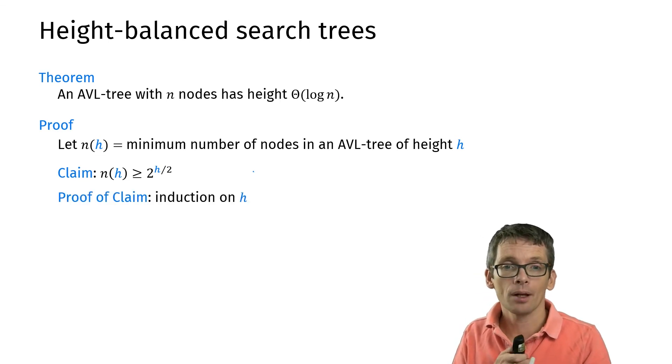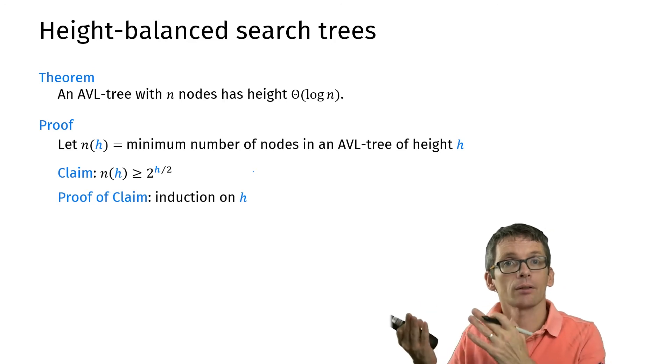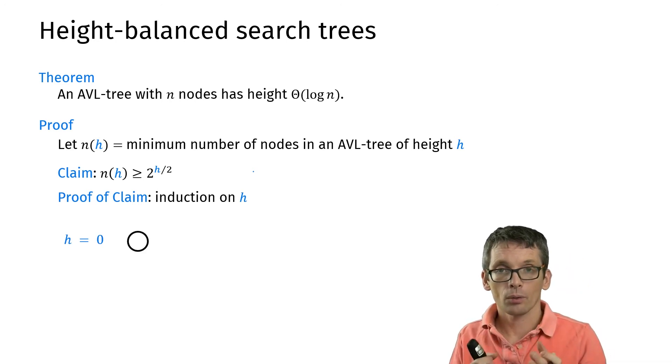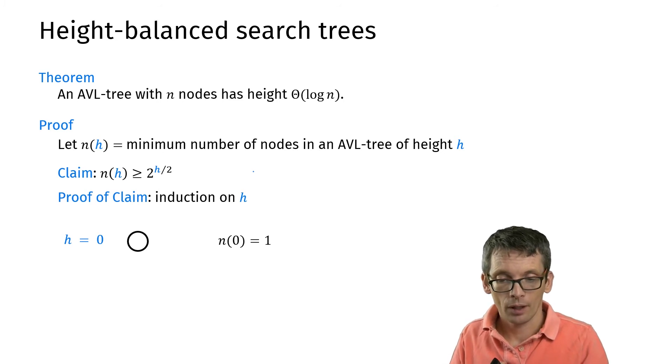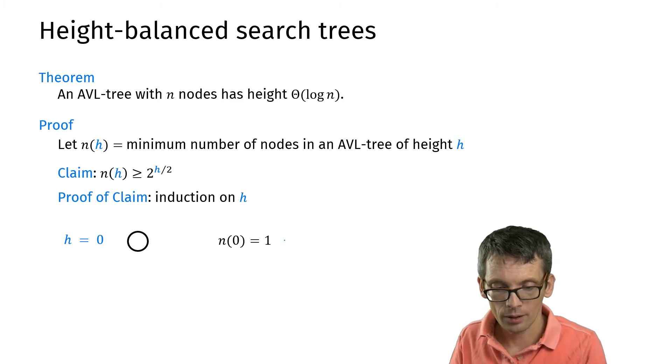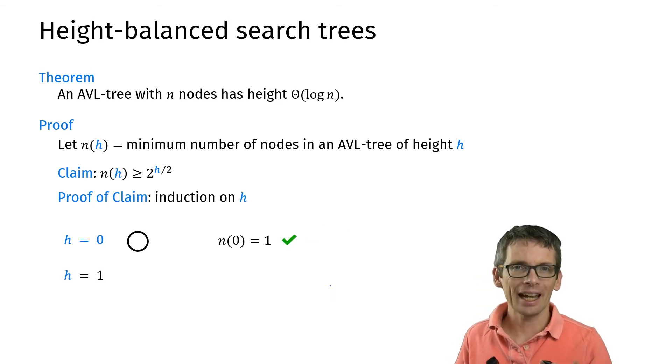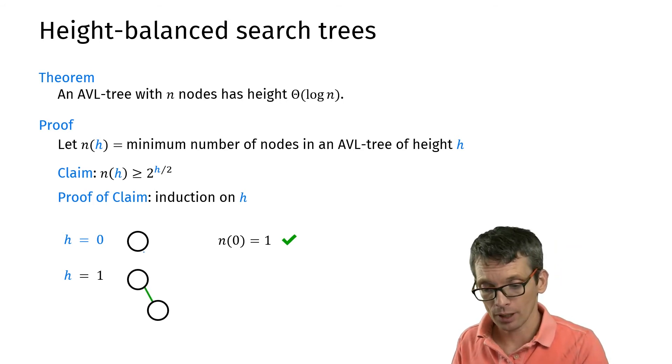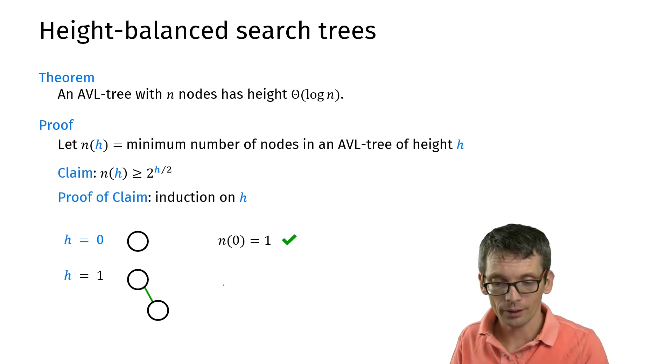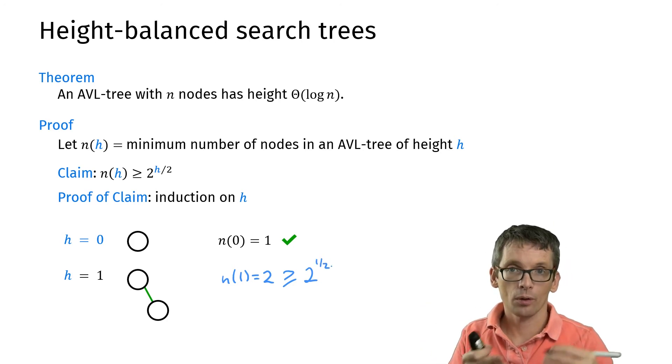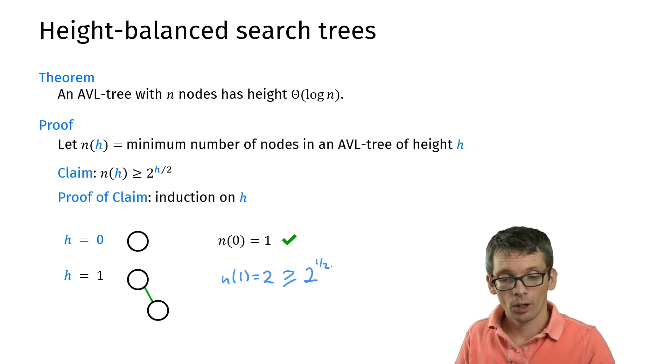So we prove this claim by induction on h and we start with a base case h = 0. So if h is 0 we just have one node, one root. So what's the number of nodes? The minimum number of nodes is simply 1. So 1 is actually 2^0 divided by 2. So here the claim holds. We will need h = 1 as additional base case so let's check the claim. So this is the smallest AVL tree that we could get of height 1. It has two nodes and 2 is indeed an upper bound for 2^(h/2) which in this case is 2^(1/2) so square root of 2 is smaller or equal to 2. So again we are fine.